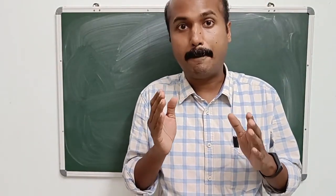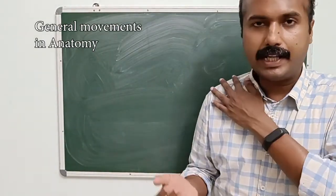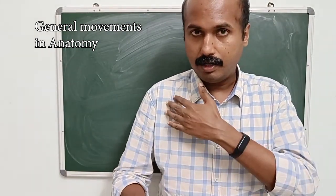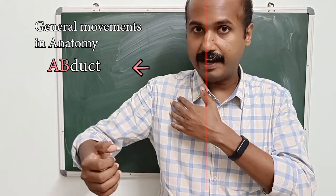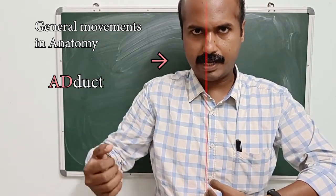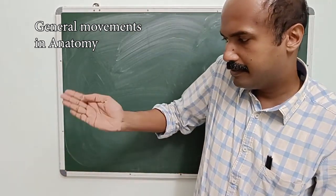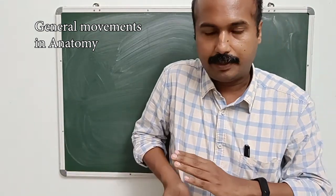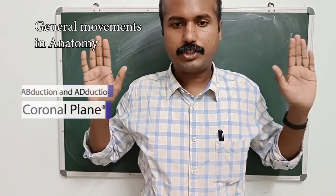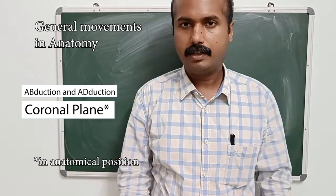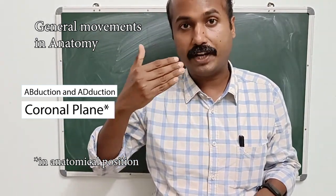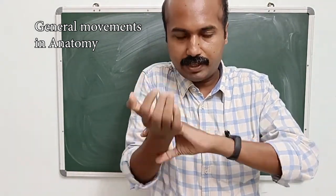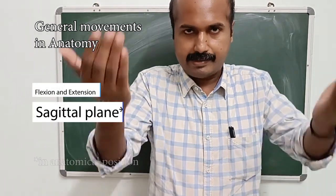Now we will discuss the movements of the thumb. Abduction is a movement — for example, at the shoulder, abduction is a movement in which the arm is taken away from the midline. That is abduction, and the reverse is adduction. In the wrist, this is abduction and this is adduction. Adduction is going towards the midline. Generally, abduction and adduction occur in the coronal plane, whereas flexion of the shoulder, elbow, wrist, and fingers all occur in the sagittal plane.